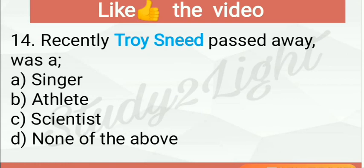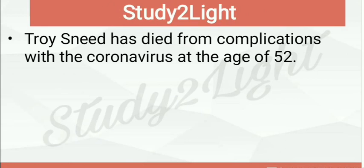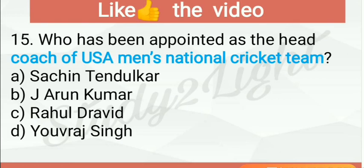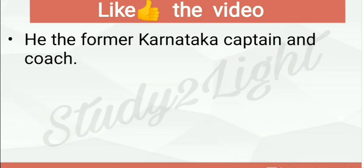Next question: Troy Sneed passed away — he was a singer, so A is the right answer. Troy Sneed died because of COVID-19 at the age of 52. Next question: who has been appointed as the head coach of USA Men's National Cricket Team? It is Jay Arun Kumar, the former Karnataka captain and coach.